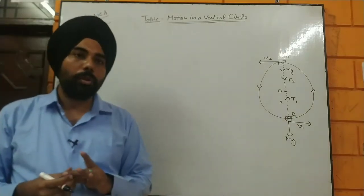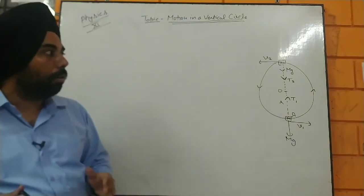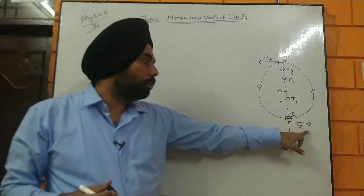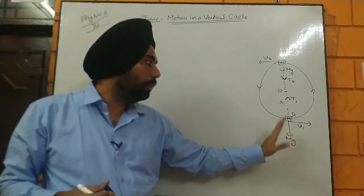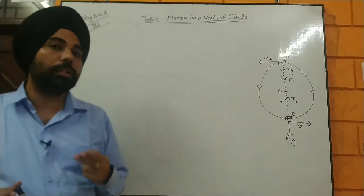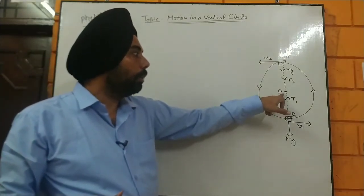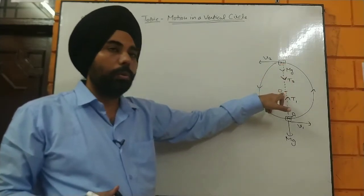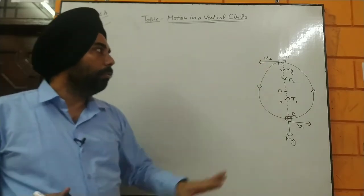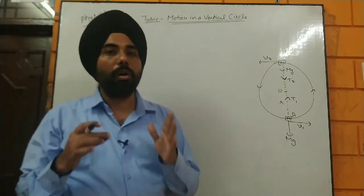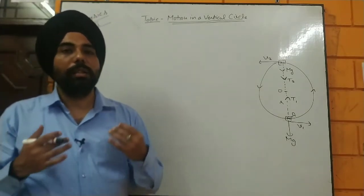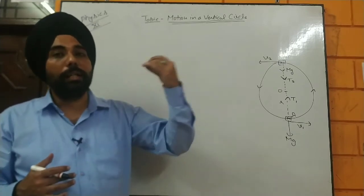Let me again explain the diagram. Point A is the lowest point where the velocity is v1, the mass is m, mg is the weight, and tension T1 is always going toward the center of the vertical circle. Similarly, at the highest point, the weight is always vertically downward and v2 is the velocity. Now we are going to calculate formulas for the velocity at the lower end and the higher end of the vertical circle.